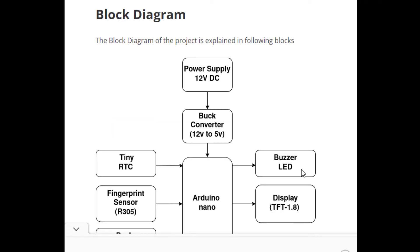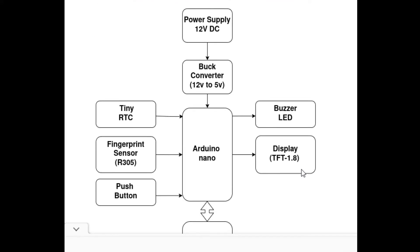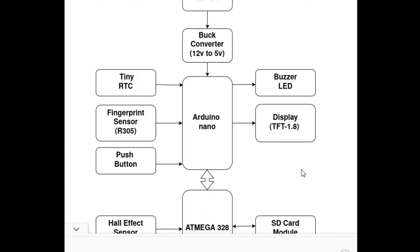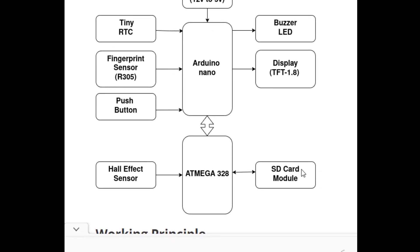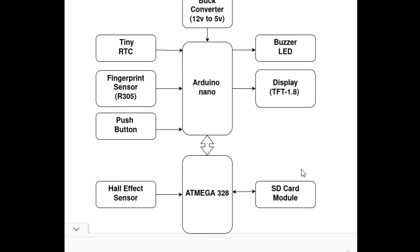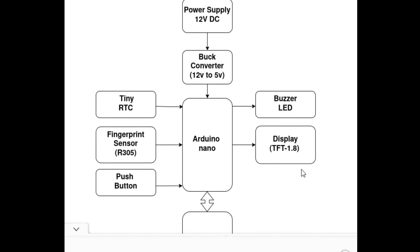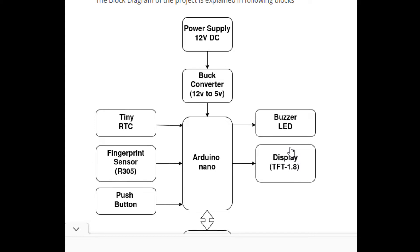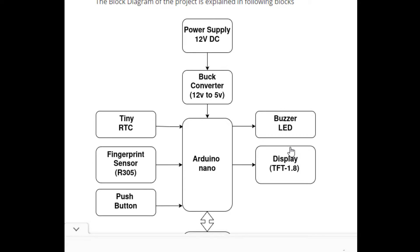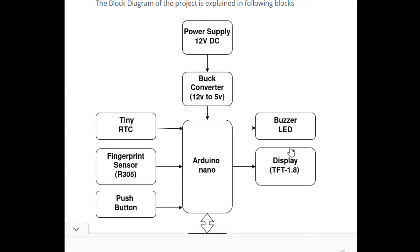This is the block diagram of our project. We have used two Arduinos due to limited pin counts. The two Arduinos communicate with each other through I2C communication protocol. Our main power supply is 12V DC, so we have used a buck converter to step down the voltage to 5V, which is fed to our microcontroller and all the sensors.